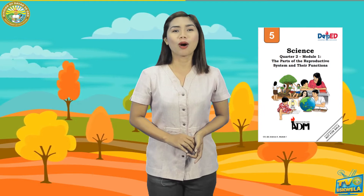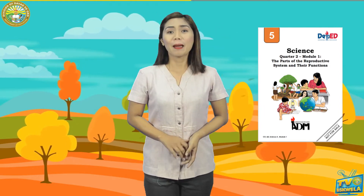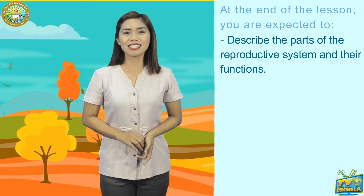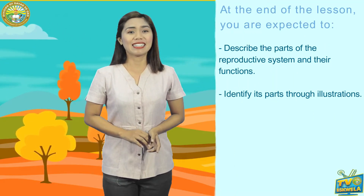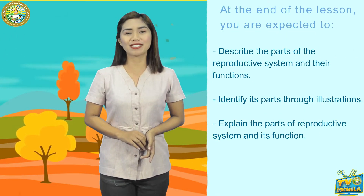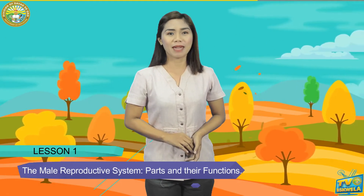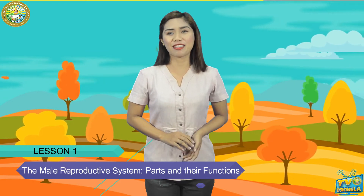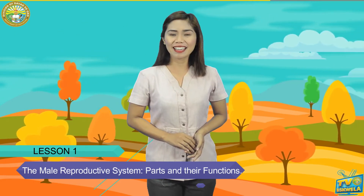For now, I want you to get your module in Science 5, Quarter 2, Module 1. Before we go on to our topic for this lesson, please be guided that at the end of the lesson you are expected to: describe the parts of the reproductive system and their functions; identify its parts through illustrations; and explain the parts of the reproductive system and its function. Our topic for this session is Lesson 1: The male reproductive system — parts and their functions. Are you ready? Let's begin.